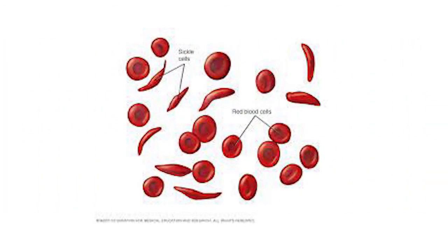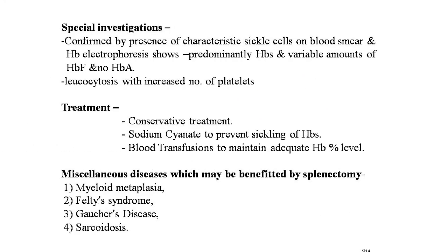Cramps due to visceral arterial stasis simulate an acute abdomen. There may also be neurological manifestations or ulcers over the malleoli. Special investigations: confirmed by characteristic sickle cells on blood smear; hemoglobin electrophoresis shows predominantly HbS, variable amounts of HbF, and no HbA; leukocytosis with increased platelet count. Treatment: conservative — sodium cyanate to prevent sickling of HbS, blood transfusion to maintain adequate hemoglobin levels. Miscellaneous diseases that may benefit from splenectomy include myeloid metaplasia, Felty's syndrome, Gaucher's disease, and sarcoidosis.